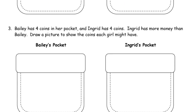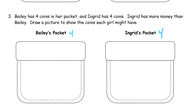Bailey has 4 coins in her pocket and Ingrid has 4 coins. Ingrid has more money than Bailey. Draw a picture to show the coins each girl might have. So Ingrid is going to have more money. There are tons and tons of right answers for this one — lots of ways you can get it. You don't even have to know what they add up to; you just have to know that Ingrid has more money.